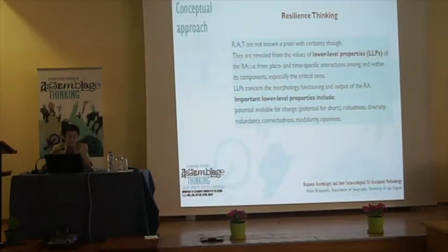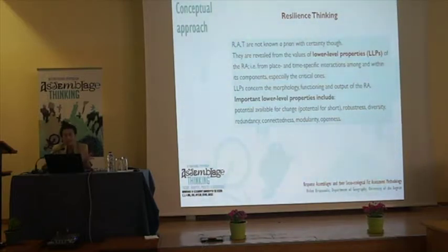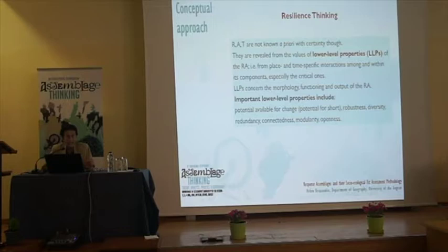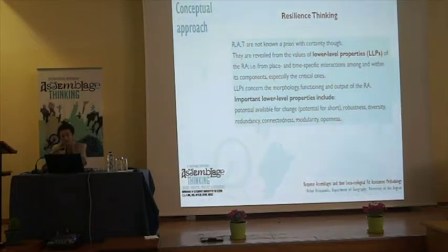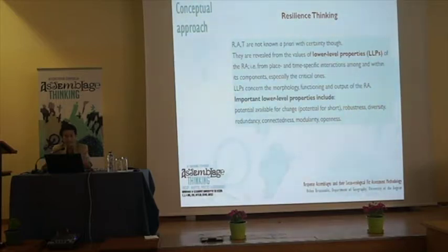Resilience, adaptability, and transformability as system-level properties are not known with certainty, but are revealed from the values of lower-level properties of the response assemblage — from place- and time-specific interactions among and within its components. Lower-level properties concern morphology, functioning, and output of the response assemblage and can be assessed on the basis of characteristics of the human and biophysical system. Most important, according to the literature, in order of priority, are: potential available for change, amount of resources, robustness, diversity, redundancy, connectedness, modularity, and openness.